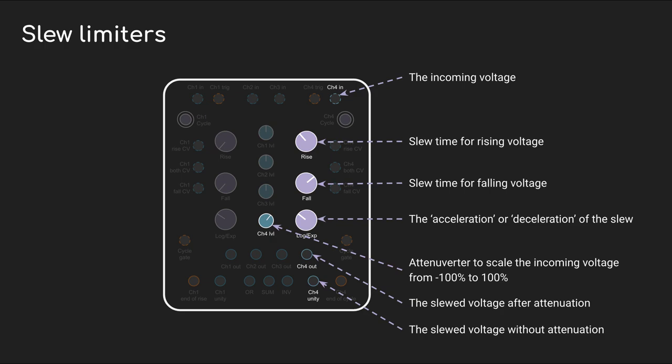It's a little weird that nowhere on the Maths panel does it say 'slew limiter,' but they're there, baked into channels 1 and 4. They're actually pretty full-featured. They allow you to dial in different slew rates for when the voltage rises and when it falls. The log/exp knob lets you change how the slew rate changes over time. And it lets you use the attenuverters to scale or invert the voltage as it gets output. Maths actually gives you two outputs: one that respects what you set with the attenuverter, and one that outputs at unity.